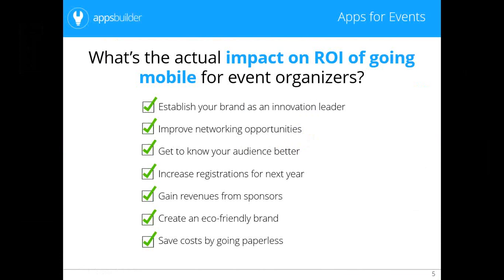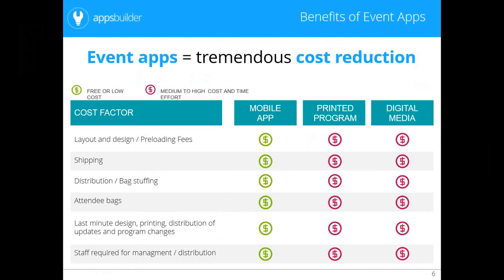Last but not least, thanks to mobile apps you can save costs by going paperless — and this is probably the most attractive benefit. Mobile apps mean a tremendous cost reduction. If you're spending $5 to $10 per attendee for programs and handouts, creating an app saves on printing costs. But it's not just printing — apps can be updated on the fly and don't require any physical distribution, so you also cut on shipping, distribution, and last-minute update costs. Time to hesitate is over: it's definitely time to create an application for your upcoming events. That's exactly where Apps Builder comes in.